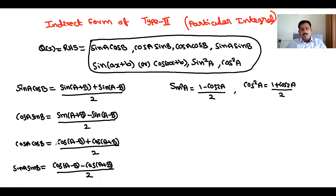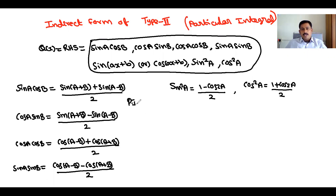Similarly, cosA cosB = [cos(A−B) + cos(A+B)] / 2. Similarly, sinA sinB = [cos(A−B) − cos(A+B)] / 2. We can then split into PI₁ plus PI₂ and apply the procedure where d² is replaced by −A², and solve the problem.